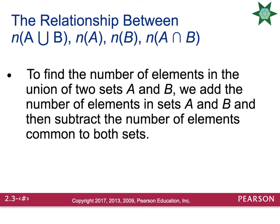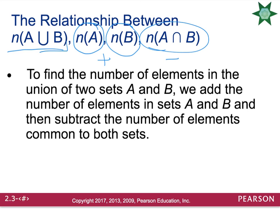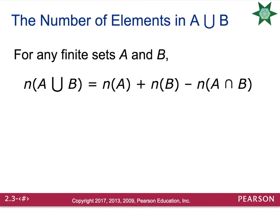There is a relationship between the number of items in A union B and the number of items in A, B, and A intersection B. You need to find how many elements are in set A, how many elements are in set B, and add those together. Then find how many elements they have in common and deduct that from the total. In formula format: the number of elements in A union B equals the number of elements in A, plus the number of elements in B, minus the number of elements in A intersection B.